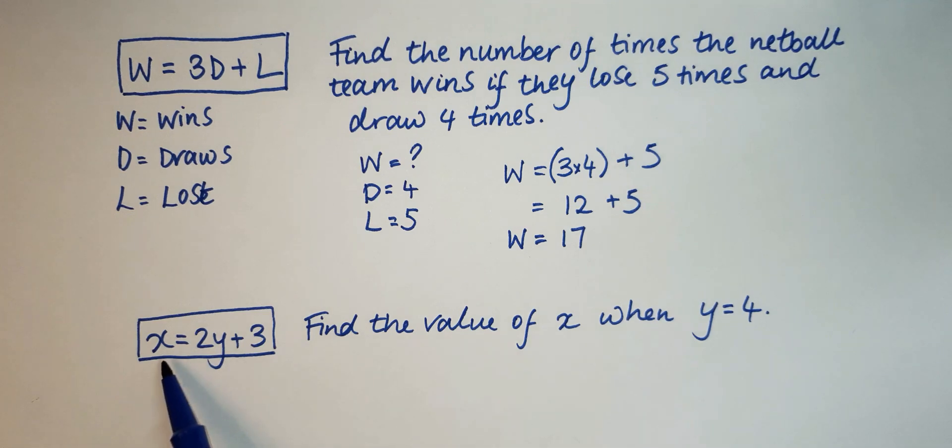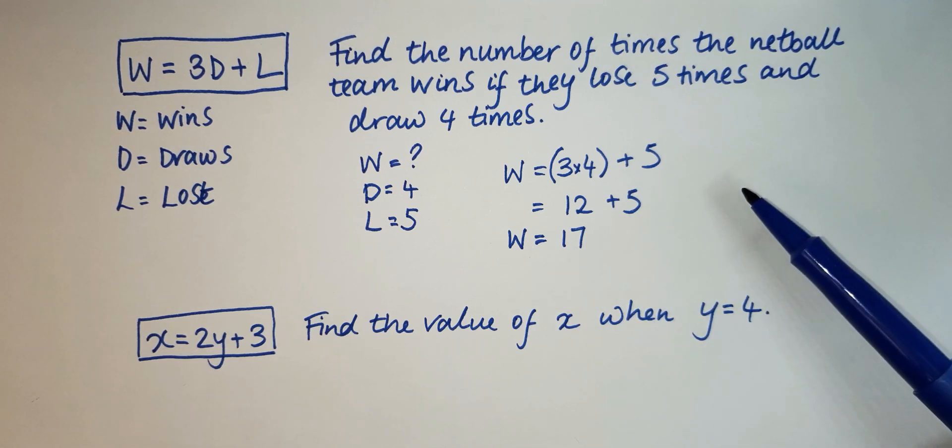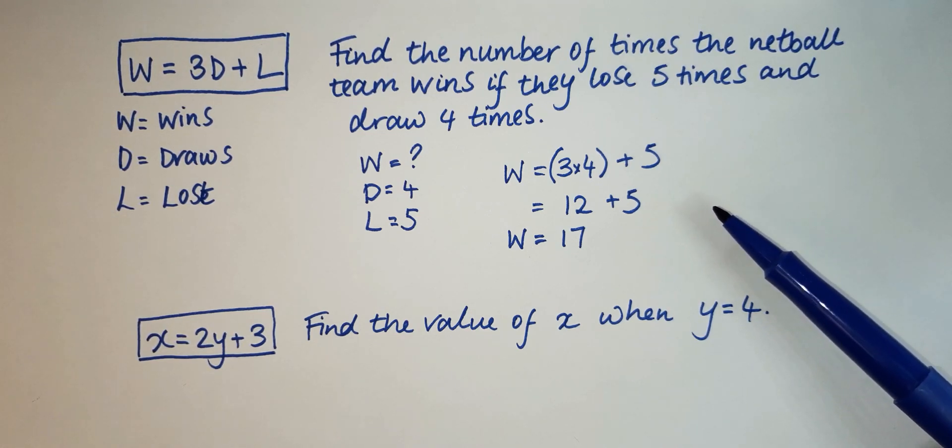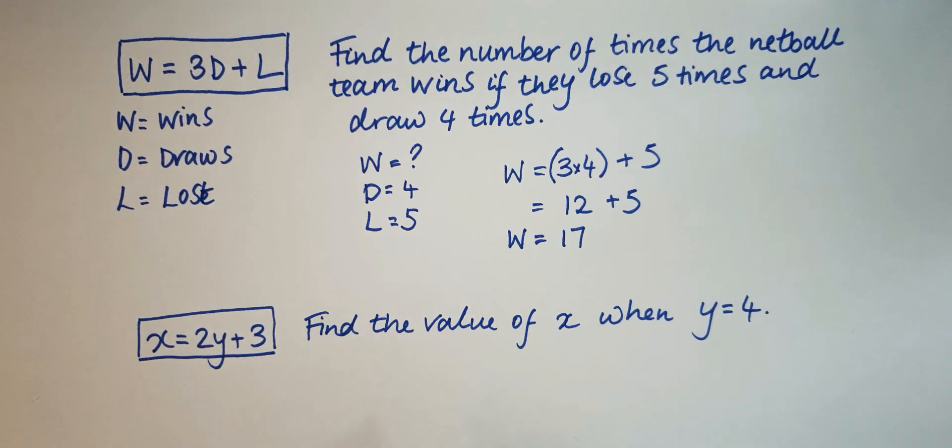And it's asking us to find the value of x when y is 4. Now this is even simpler than this first question because it's telling you exactly what to do. You don't have to condense the information down. So here all we do is we have x is equal to 2 times 4, because y is equal to 4, plus the 3. Now we know that 2 times 4 is 8, and 8 plus 3 is 11.